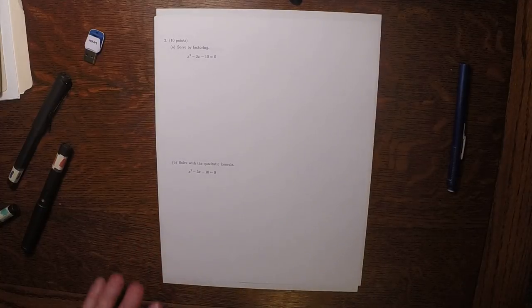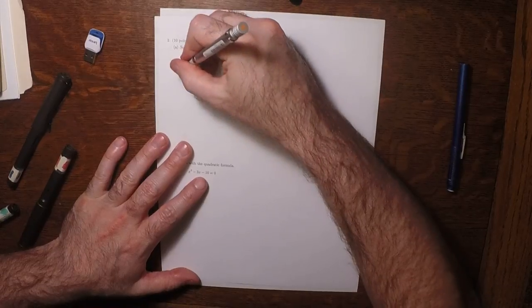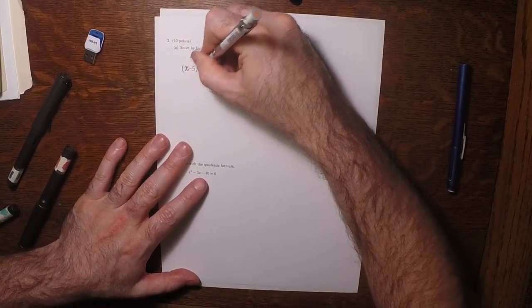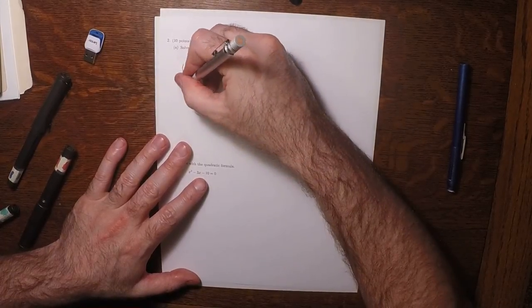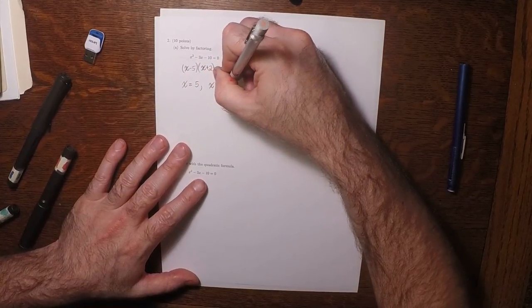So for part 2, solve by factoring. So apparently we could factor it. So how about (x - 5) multiply by (x + 2) equals 0. So the answer is x is 5, x is negative 2.